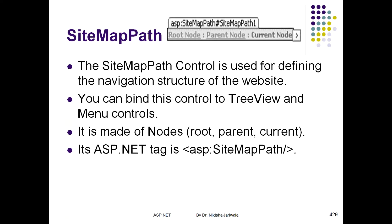The first navigation control is the SiteMapPath control. The SiteMapPath control will provide us the navigation structure of our website, in which we can specify the whole path — which child page, which parent page, and which current page. For example, index page, hardware page, and under hardware, input and output — where input includes mouse and keyboard, and output includes monitor.